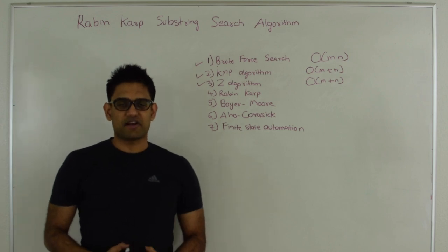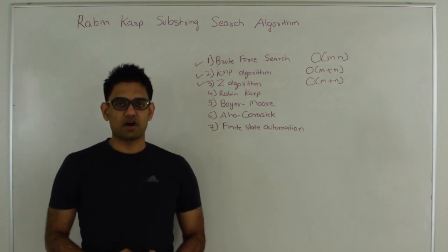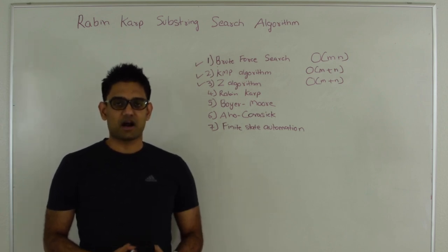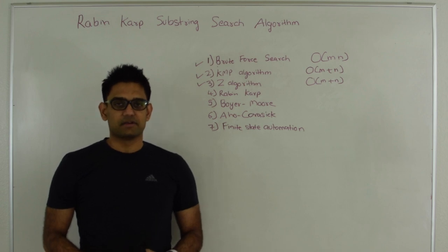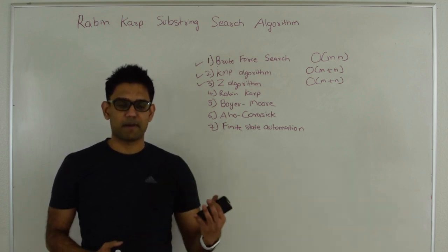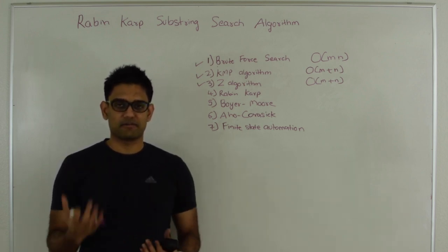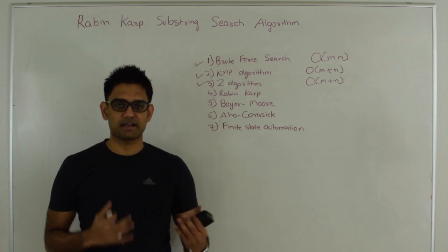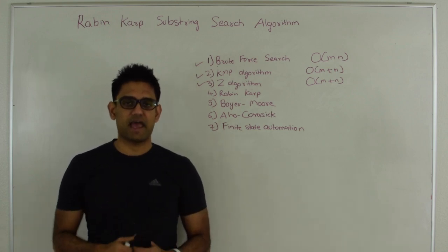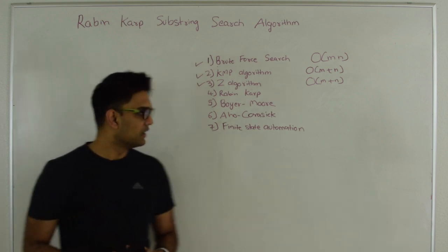Hello friends, my name is Tushar and today I'm going to talk about the Rabin-Karp substring search algorithm. So what is a substring search? You're given a pattern and you're given a text, and you have to find if this pattern exists in this text or not.